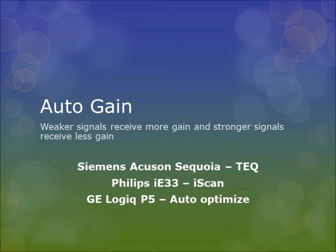With auto gain, weaker signals receive more gain and stronger signals receive less gain. In the three machines utilized, the Siemens AccuSone Sequoia uses the TEQ, the Philips IE33 uses the iScan, and the GE Logix P5 uses auto-optimize.